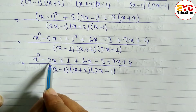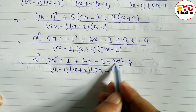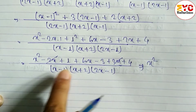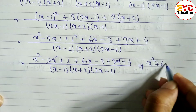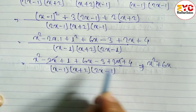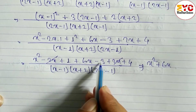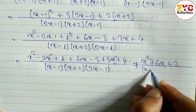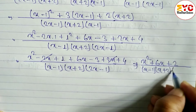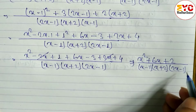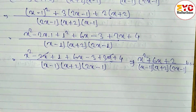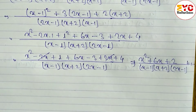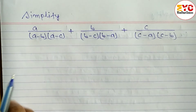For x terms: minus 2x plus 6x plus 2x — the minus 2x and plus 2x cancel, leaving 6x. For constants: 1 plus 4 is 5, minus 3 gives 2. The x squared term stands alone. So the answer is (x squared plus 6x plus 2) over (x minus 1)(x plus 2)(2x minus 1).